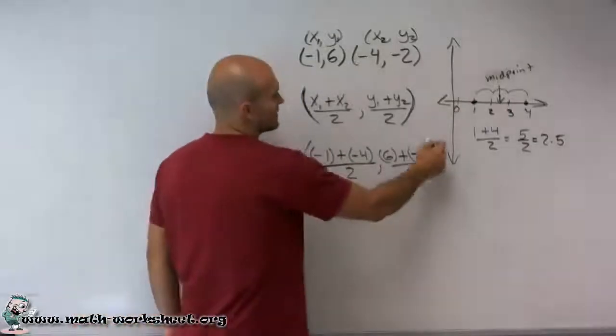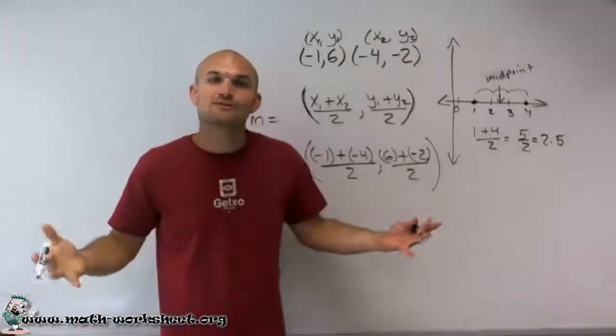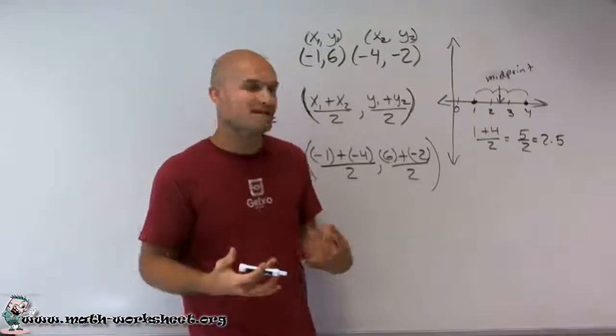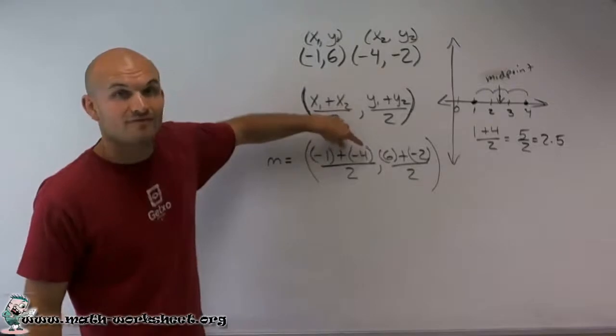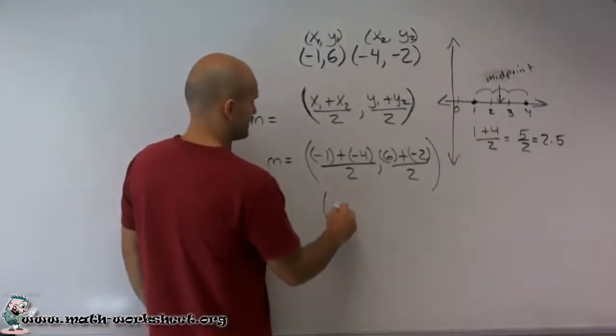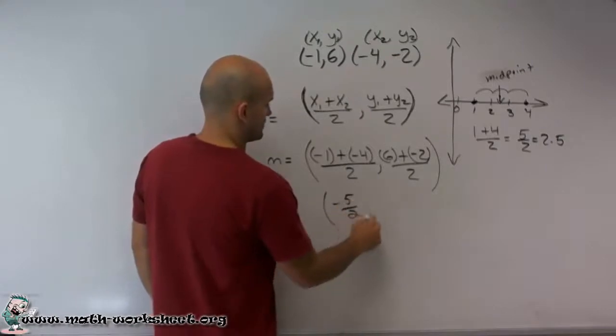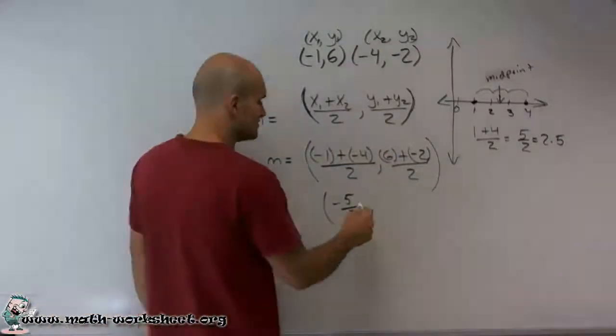And the reason why I say always put in your parentheses is I work with students all the time that always forget those parentheses and that's a lot of time where mistakes come from. So now let's just do the math. Negative 1 plus negative 4 is a negative 5 divided by 2, comma, 6 plus negative 2 is 4 divided by 2.